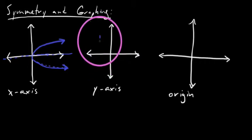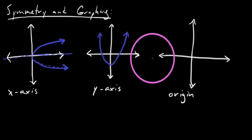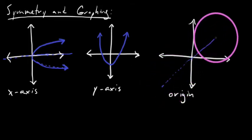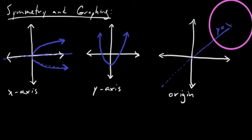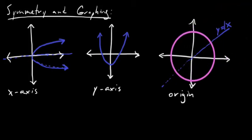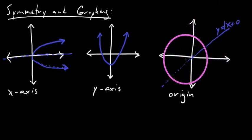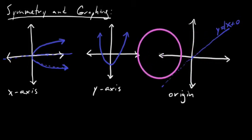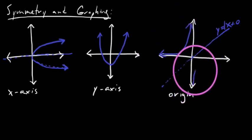Something that would have Y-axis symmetry would be a parabola that opened up. And then we have origin symmetry. When we talk about origin symmetry, we're really saying that a graph would be symmetrical about the line Y equals X — technically Y equals 1X plus 0 — which has a Y-intercept of 0 and a slope of 1. A graph that would exhibit symmetry about the origin would be something like a hyperbola.